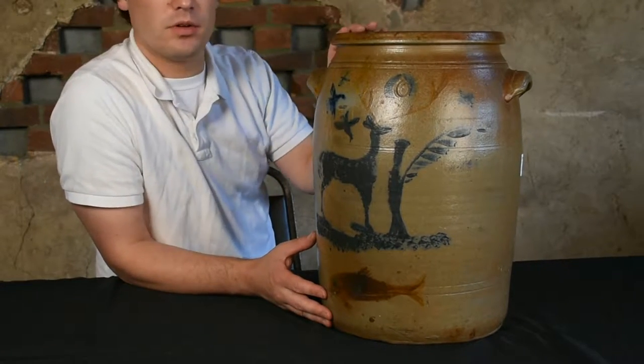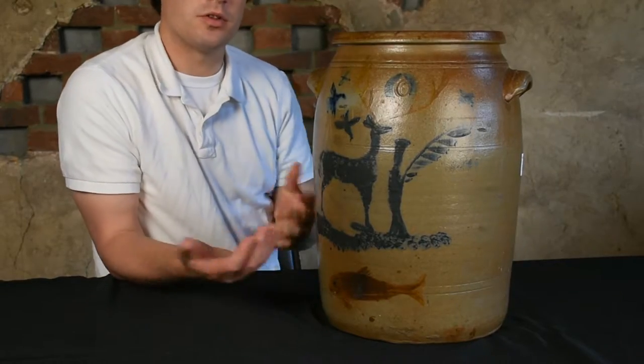It's really an exceptional piece on a number of levels. Morgantown stoneware, of course, is most well known for its people decorations. People refer to stoneware with human forms as people crocs from that region. Some were made in West Virginia, there's a handful also made in Uniontown, Pennsylvania area.